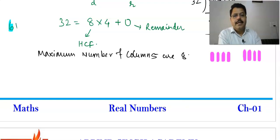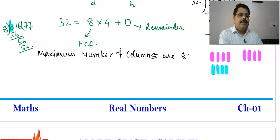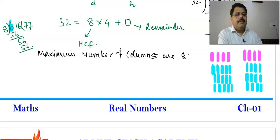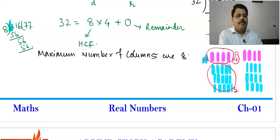Let's understand practically: if we divide 616 by 8, we get 77 people per group for army contingent, and 32 divided by 8 gives 4 groups for army band. So there will be 8 columns — that is the answer.